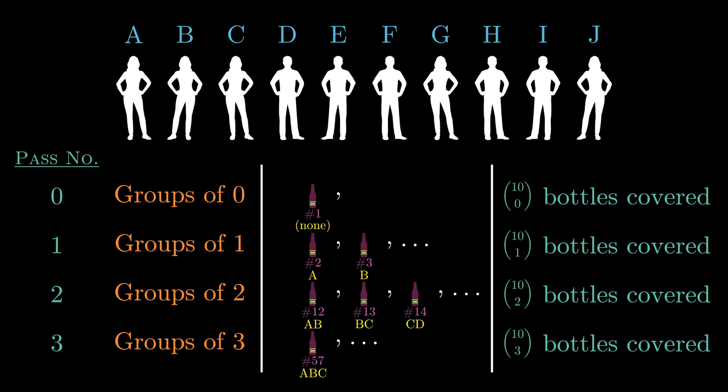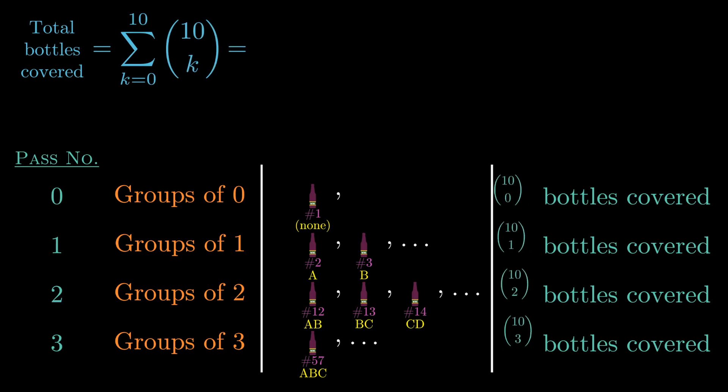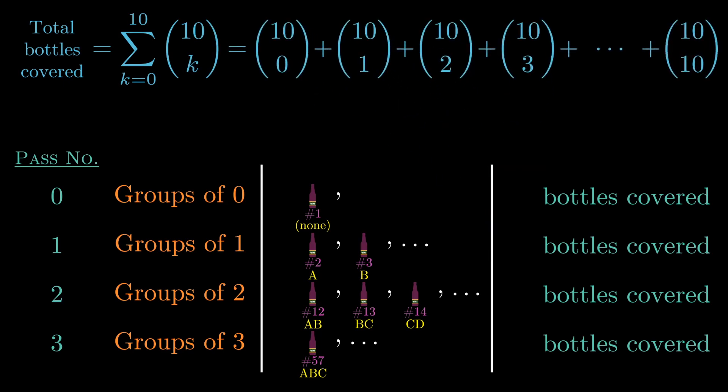And remember, the order in which they taste the bottles doesn't matter, because no matter whether they're the first to drink from the poison bottle or the last to drink from it, they very regrettably die anyway. And therefore, if you want to look at the total number of bottles you could possibly cover using this system, you simply add up all the 10 choose k terms, and we get that the total number of bottles that can be covered using this system is the summation as k goes from 0 to 10 of 10 choose k.